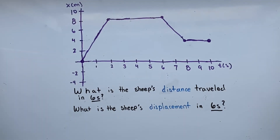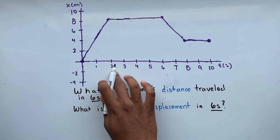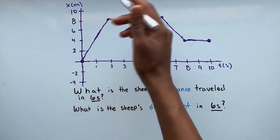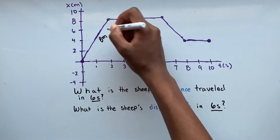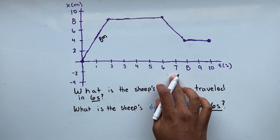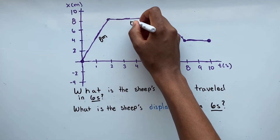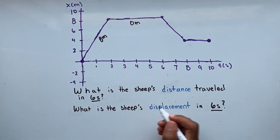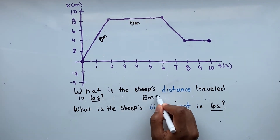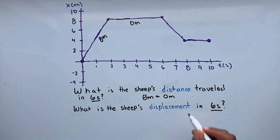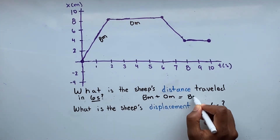This next problem may look similar to the last, but take caution — this time we're asked what's the sheep's distance traveled in 6 seconds and what's the sheep's displacement in 6 seconds. From 0 to 2 seconds, our sheep traveled from position 0 to 8, so that's a total distance of 8 meters. From 2 to 6 seconds, our sheep remained at position 8, so total distance traveled is 0 meters. Adding these: 8 plus 0 gives us 8 meters for our distance traveled in 6 seconds.